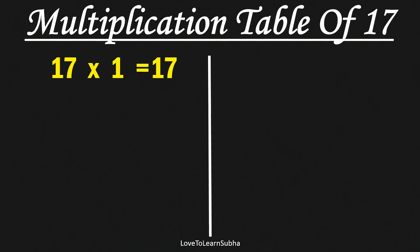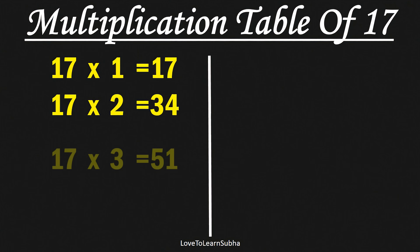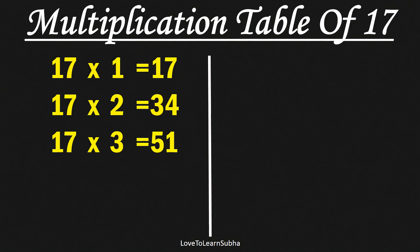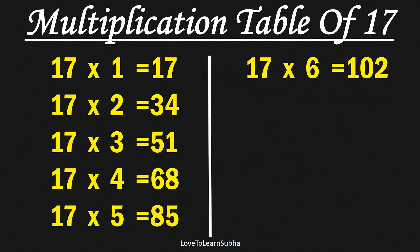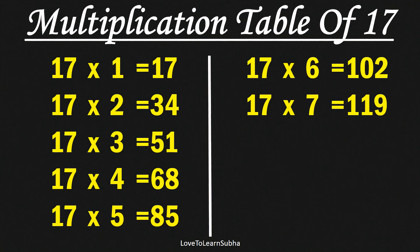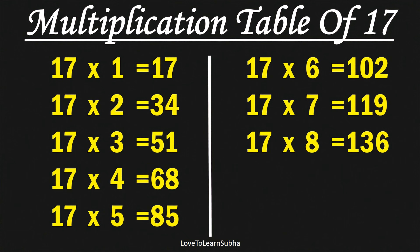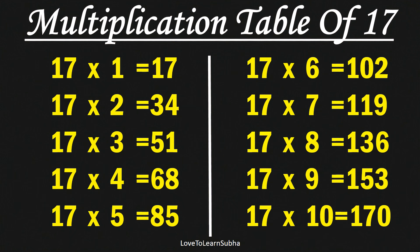Multiplication table of 17. 17×1 is 17, 17×2 is 34, 17×3 is 51, 17×4 is 68, 17×5 is 85, 17×6 is 102, 17×7 is 119, 17×8 is 136, 17×9 is 153, 17×10 is 170.